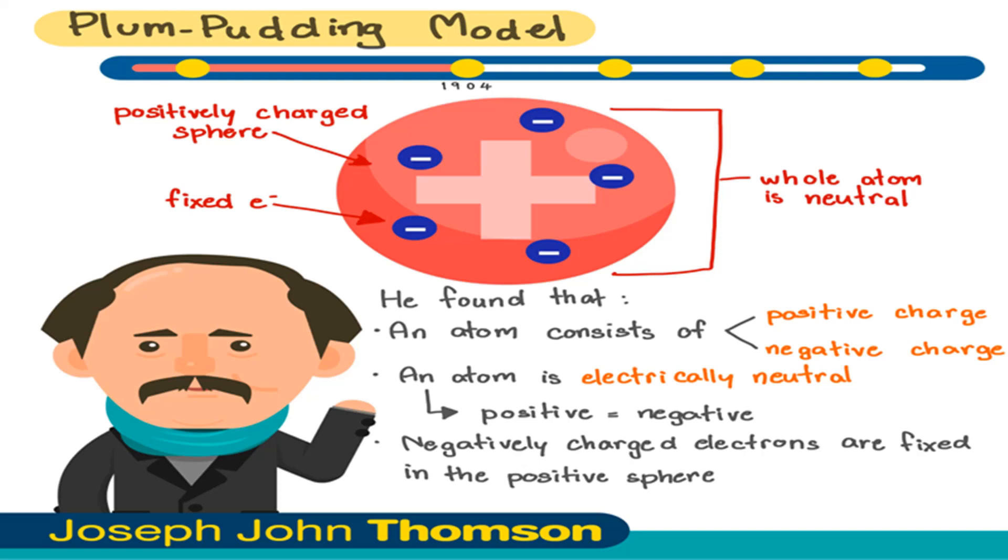The Plum-Pudding model explains some electrical properties of atoms. It said nothing, however, about the number of protons and electrons, the arrangement in the atom, or the ease with which atoms are stripped of electrons to form ions.